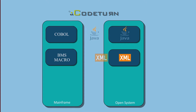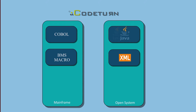For this introduction video, we picked the transformation of COBOL with BMS Maps on IBM mainframe with 3270 runtime protocols into Java that runs on open systems such as Windows and Linux. CodeTurn uses XML as file format for the map transformation since it is universally processable.